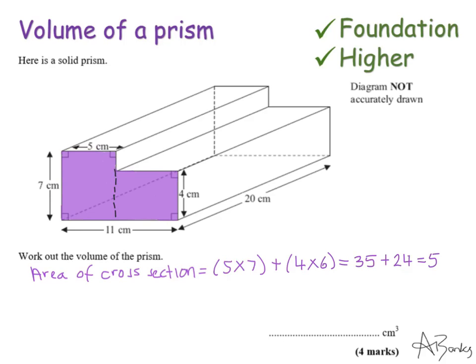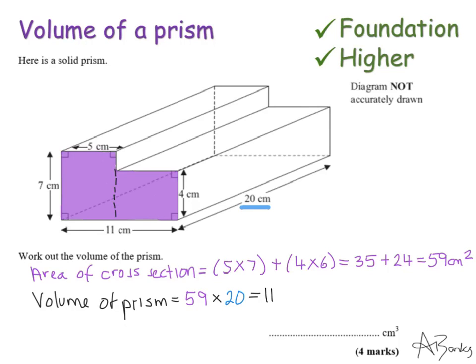The area of the cross-section is 35 plus 24, which is 59 centimetres squared. Just like before, I multiply this by how far back it goes — its depth is 20. So the volume of this prism is 59 multiplied by 20, which is 1180 centimetres cubed. Since they've given me the units in this example, I can write 1180 as my answer.